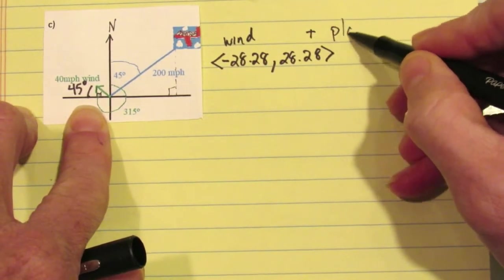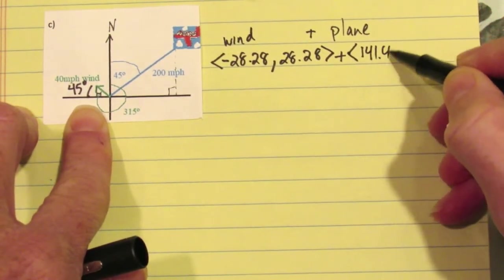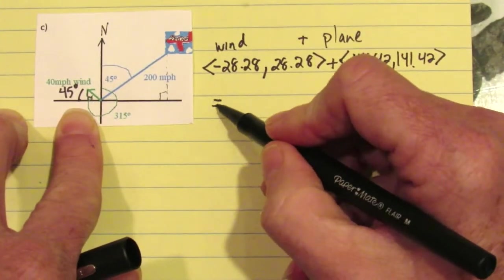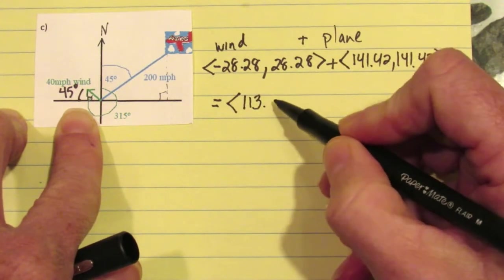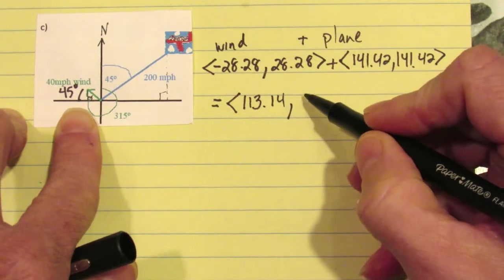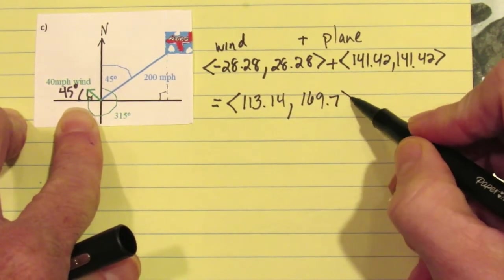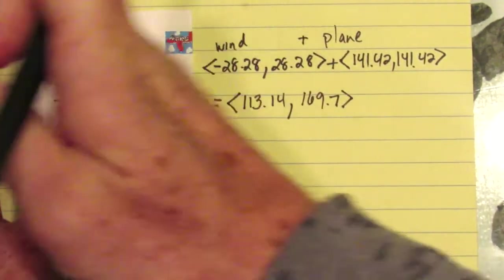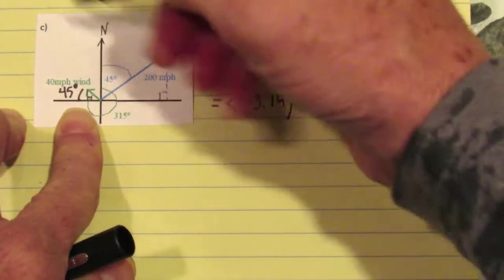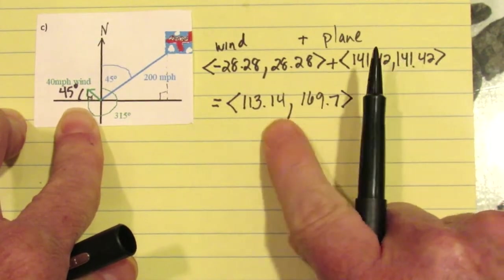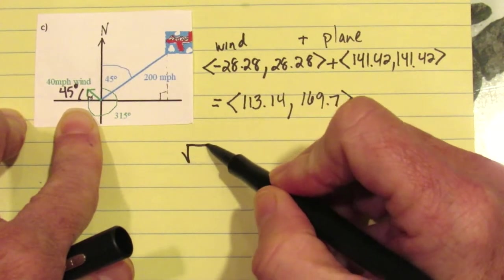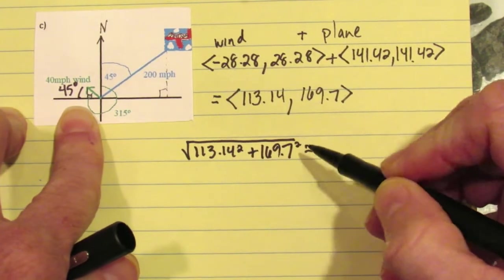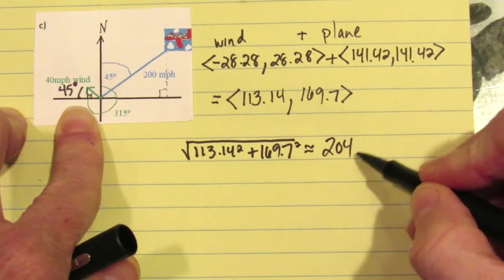Adding that to the plane — which is still the same plane with unchanged speed and direction — we end up with 113.14 for the x coordinate and 169.7 for the y coordinate. The wind is pushing the plane a little bit over to that side. Those coordinates are the terminal point of the resultant vector. Finding the magnitude: 113.14 squared plus 169.7 squared, then take the square root, gives approximately 204 miles per hour.